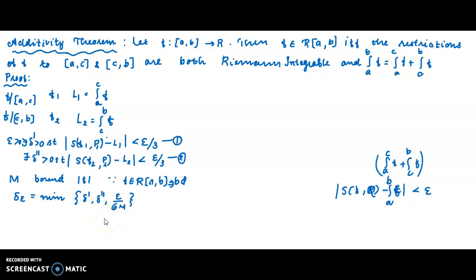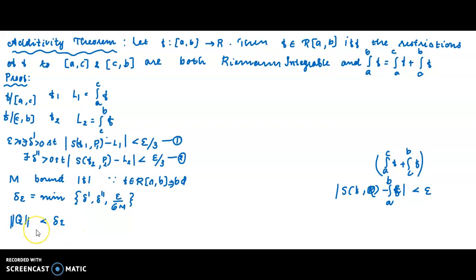Let's define epsilon. Let Q be a partition with norm less than delta-epsilon. We need to prove that modulus of S(Q) minus (L1 plus L2) is less than epsilon, where L1 equals the integral from a to c of f and L2 equals the integral from c to b of f.